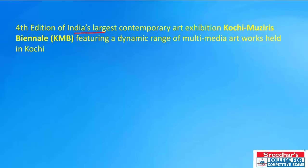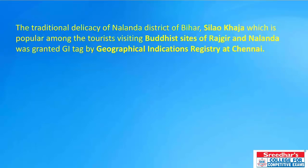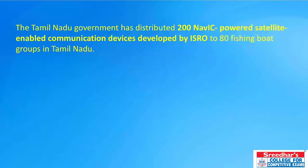The fourth edition of India's largest contemporary art exhibition, Kochi-Muziris Biennale, featuring a dynamic range of multimedia artworks, was held in Kochi. The traditional delicacy of Nalanda district, Bihar — Silao Khaja — has received a Geographical Indications (GI) tag. It is popular among tourists visiting Buddhist sites of Rajgir and Nalanda, and was granted the GI tag at Chennai.